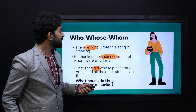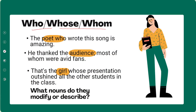Let's look at 'who,' 'whose,' and 'whom.' Example: 'The poet who wrote this song is amazing.' Here 'who' refers to the poet, and we know that 'who' refers to people. Another example: 'He thanked the audience, most of whom were avid fans.' Here 'whom' is relating to the audience.